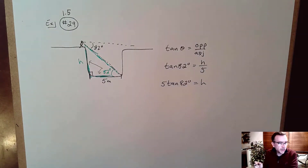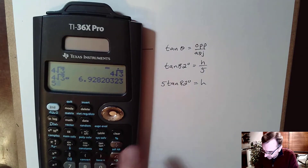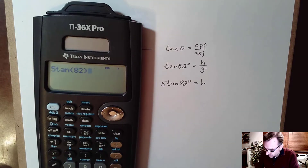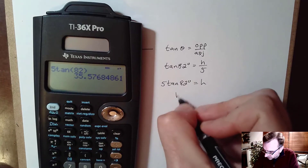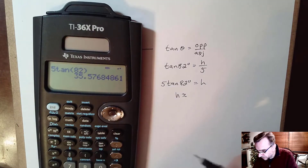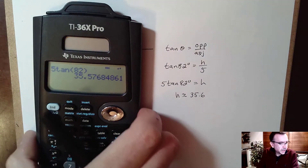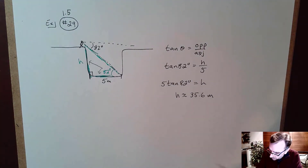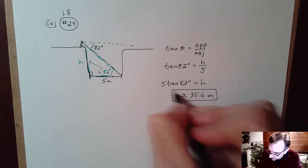I can do that on a calculator. Type in 5 tangent of 82 degrees — make sure you're in degree mode — and enter. I'll round to one decimal place: that's approximately 35.6. The units were given in meters, so the height of the sinkhole is approximately 35.6 meters.